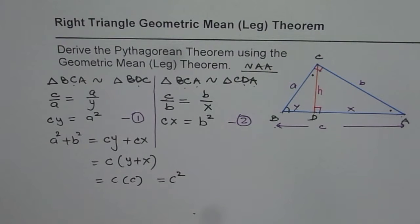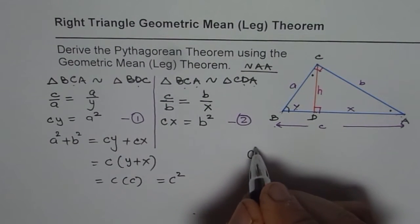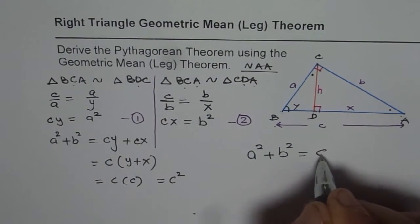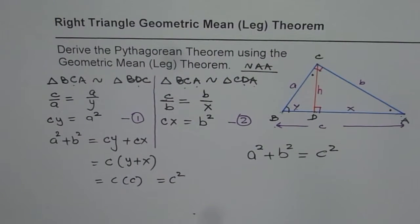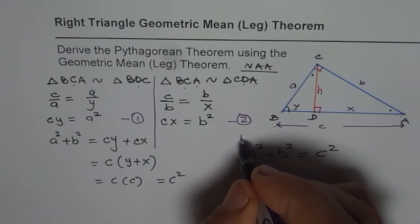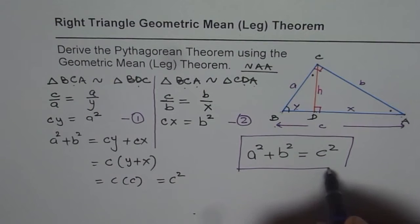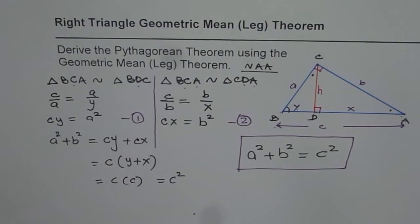And that is what the Pythagorean theorem is. So let me write big and bold. A square plus B square is equal to C square, right? So that is how you can prove Pythagorean theorem for a right triangle. That's an excellent proof. You can use it with or without right triangle geometric mean.